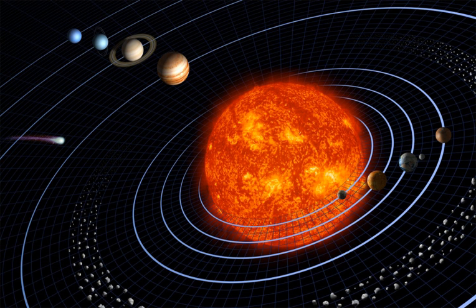This is a list of gravitationally rounded objects of the solar system, which are objects that have a rounded, ellipsoidal shape due to the forces of their own gravity.